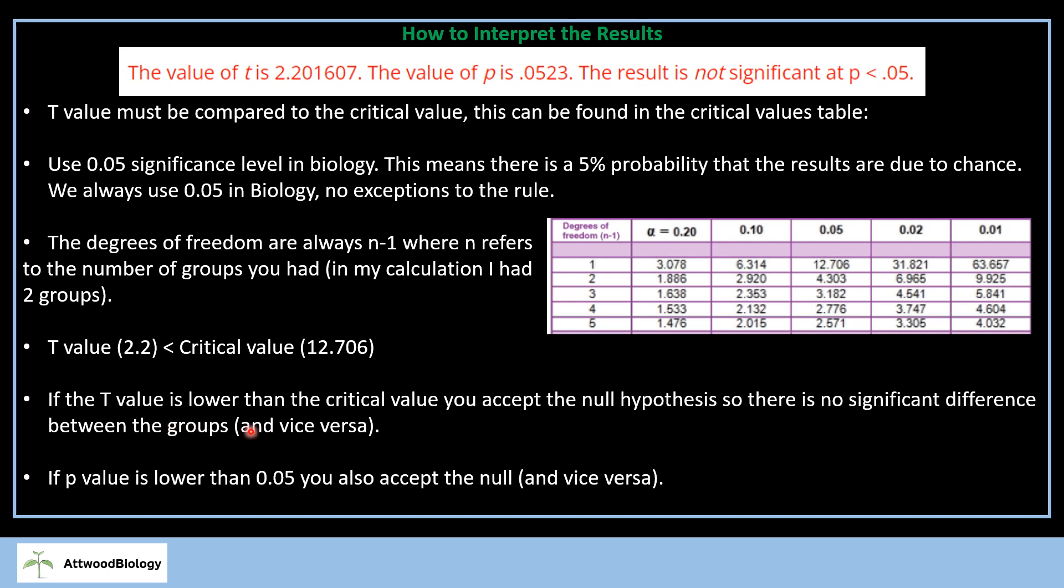Now, if the T-value is smaller than the critical value, you're going to accept your null hypothesis. The null hypothesis would always state that there is no significant difference between the groups. The null hypothesis should be stated before you carry out the T-calculation.